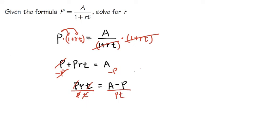And we did it. We have r by itself, and this is equal to A minus P all over pt. This is how we get r by itself.